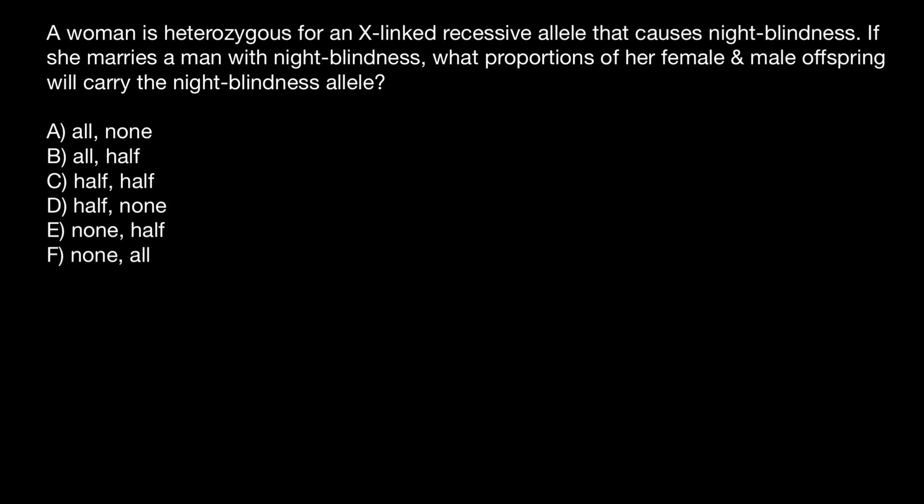Hello, and welcome to Nikolai's genetics lessons. Today's problem: a woman is heterozygous for an X-linked recessive allele that causes night blindness. If she marries a man with night blindness, what proportions of the female and male offspring will carry the night blindness allele? You have to choose one of these answers.